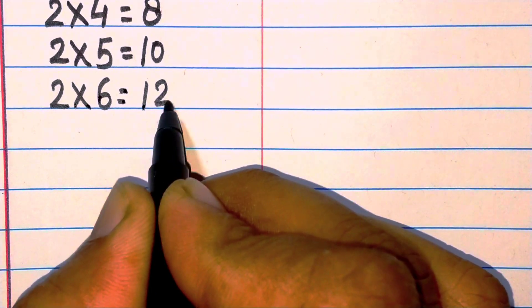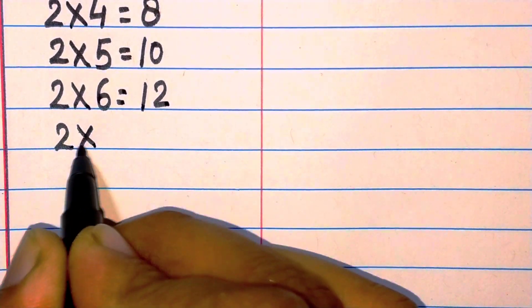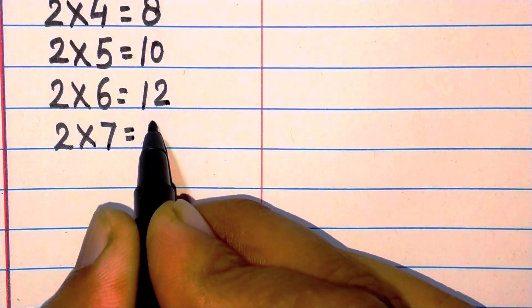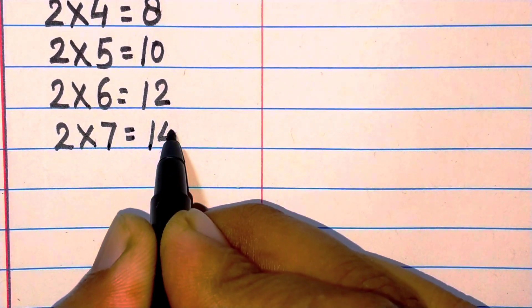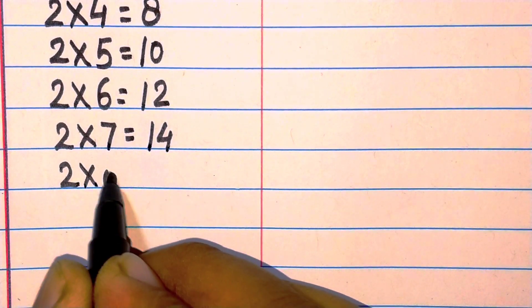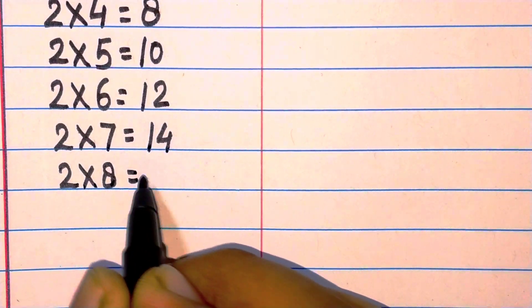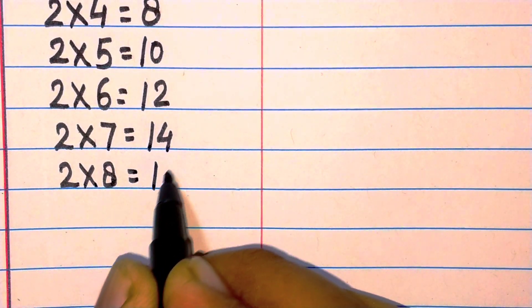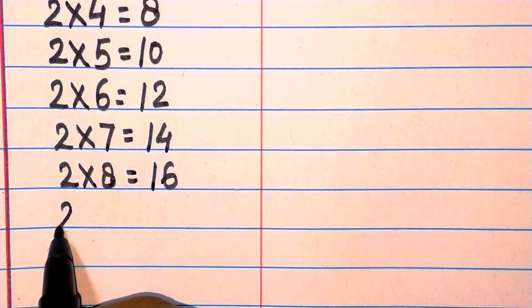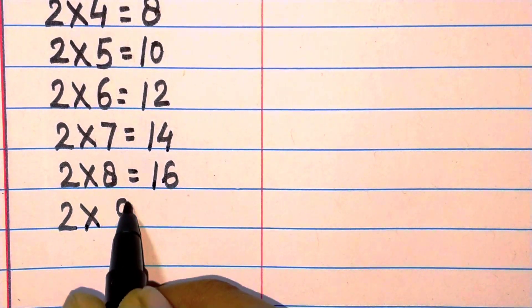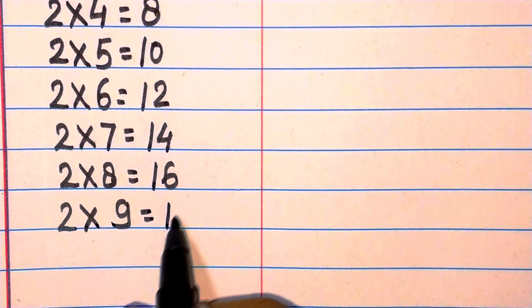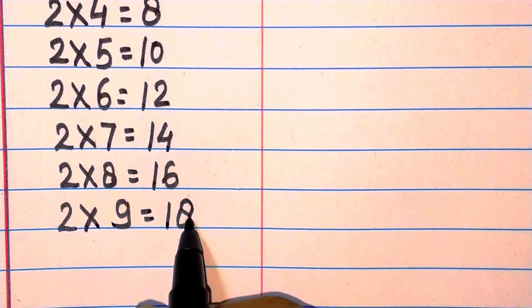Two seven are fourteen, two eight are sixteen, two nine are eighteen, two ten are twenty.